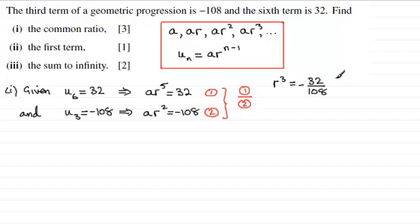And this reduces down. You can divide top and bottom by 4. 4 goes into 32 eight times, and 4 goes into 108 twenty-seven times. And these are nice numbers because you can cube root them very easily. So to get r, we need to find the cube root then of minus 8 over 27.